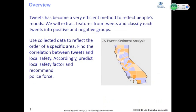This is the overview of our project. Since tweets have become a very efficient method to reflect people's mood, we will extract features from tweets and classify each tweet into positive or negative groups. We will then use this collected data to reflect the order of a specific area. We found a lot of open-source public crime data and identified the correlation between tweets and local safety. Accordingly, we will predict the local safety factor and recommend the police force.